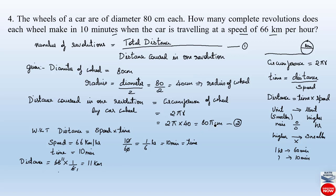The total distance is 11 kilometers, but the distance covered in one revolution is in centimeters. We need to convert 11 kilometers to centimeters. Since we are converting from a higher unit to a lower unit, we multiply. We know that 1 kilometer = 1000 meters and 1 meter = 100 centimeters. So 11 km = 11 × 1000 × 100 = 1,100,000 cm. Let this be equation 3.